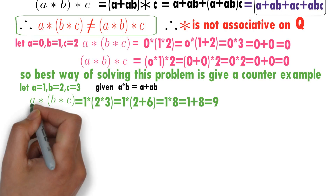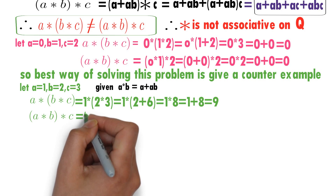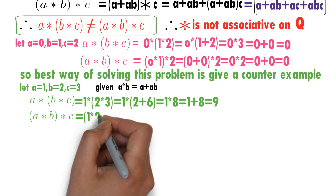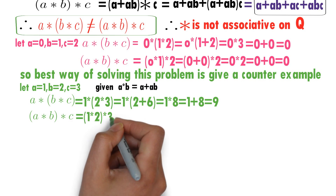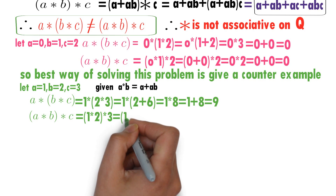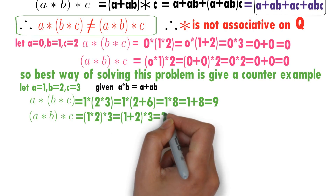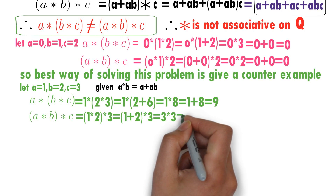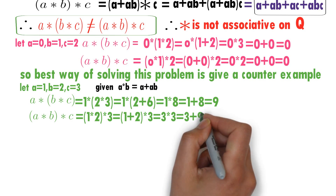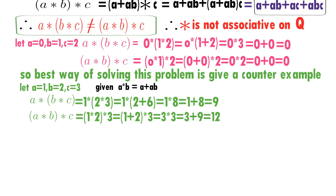Now calculate (a★b)★c = (1★2)★3. First, 1★2 = 1 + 1·2 = 3, so 3★3 = 3 + 3·3 = 3 + 9 = 12. From this it is clear that a★(b★c) = 9 ≠ 12 = (a★b)★c. This is the best method to prove that star is not associative — give a counterexample.